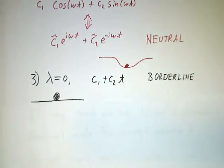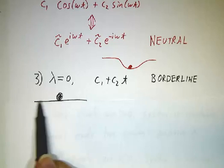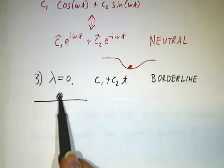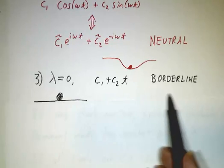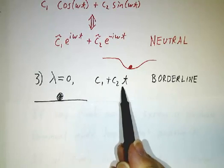And the last case is if the eigenvalue is zero. This would describe a ball rolling on a flat track. It rolls and it keeps rolling, rolling, rolling.